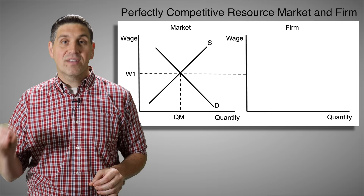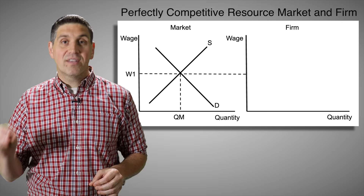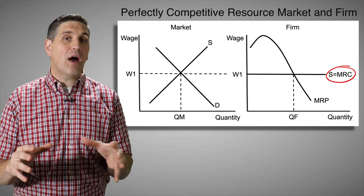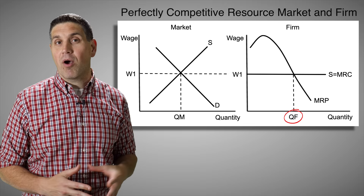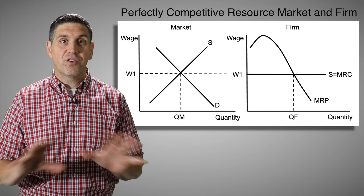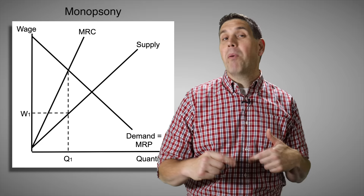The real key graph you need to know is a perfectly competitive firm in the resource market — a firm hiring workers. The wage is set by the market, giving you a horizontal supply curve equal to the marginal resource cost. If you calculate how much revenue each worker generates, you get the marginal revenue product, which is downward sloping. That tells you exactly how many workers to hire, where MRP equals MRC. The good news about this graph is there's no ATC or box of profit to draw.